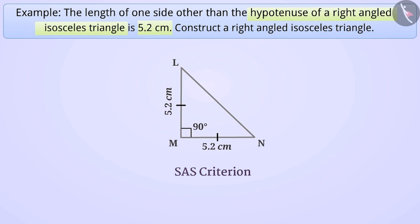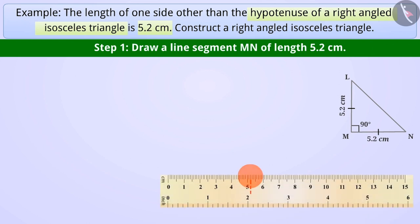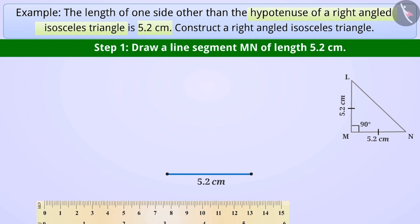Now, let's construct triangle LMN. Step 1. First, with the help of a ruler, draw a line segment MN of length 5.2cm.